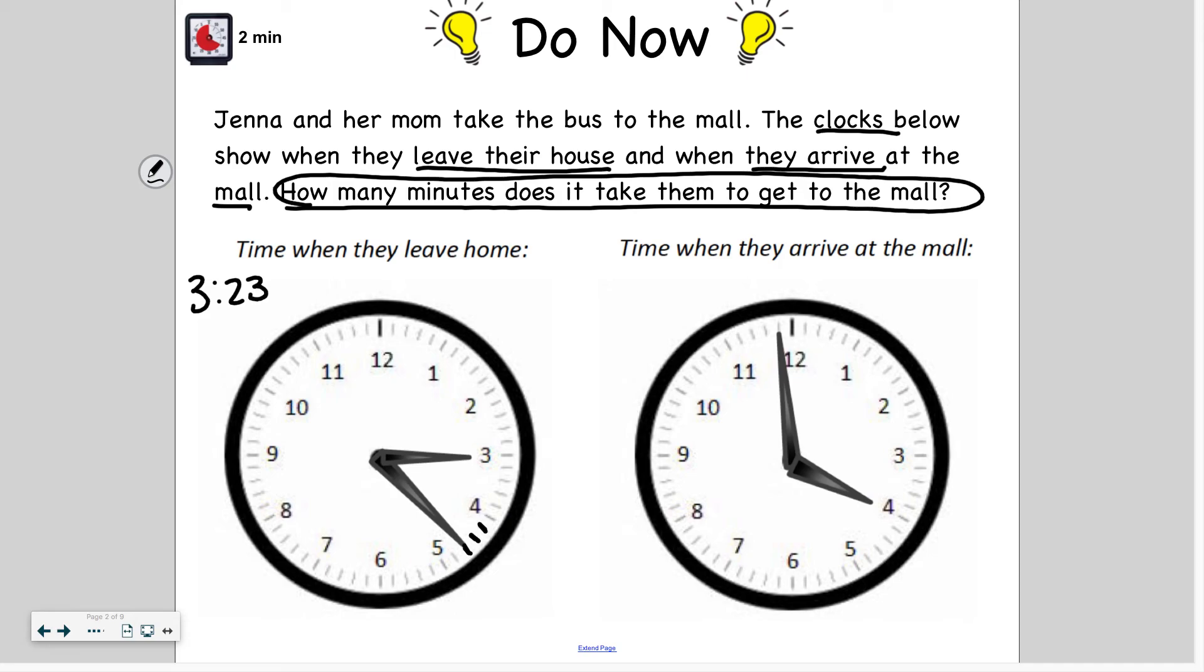When they leave their house, they arrive at the mall. I see it's almost 4 o'clock and I know it's almost 4 o'clock because the minute hand is not pointing directly at the 12. So I know it's 1 minute before 4 o'clock. So that means it is 3:59. And I'll double check by skip counting. So 5, 10, 15, 20, 25, 30, 35, 40, 45, 50, 55, 57, 58, 59. So it is 3:59.